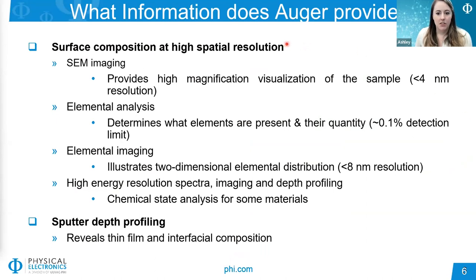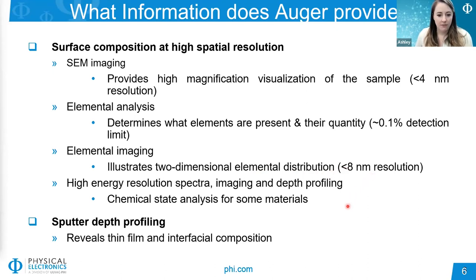From AES, you can get SEM images that provide high magnification visualization of the sample down to about 4 nanometers in spatial resolution. You can also determine which elements are present on the surface and their quantity, with a detection limit of about 0.1 atomic percent for most elements. We can get two-dimensional elemental distribution with elemental imaging at less than 8 nanometers spatial resolution, and chemical state information for some materials using high-energy resolution analysis. Furthermore, we can sputter depth profile materials to reveal thin film and interface composition, using a monoatomic argon ion gun that can also serve as a low-voltage flood gun to mitigate charging on insulating samples.